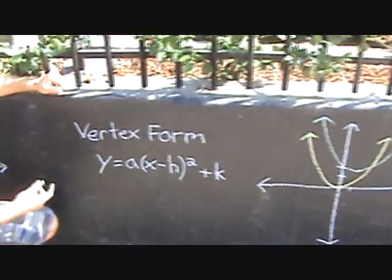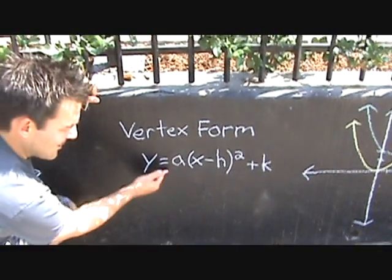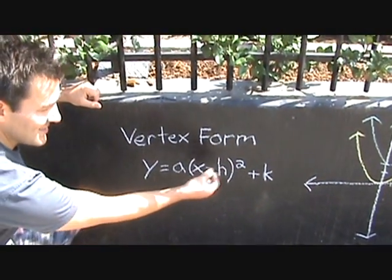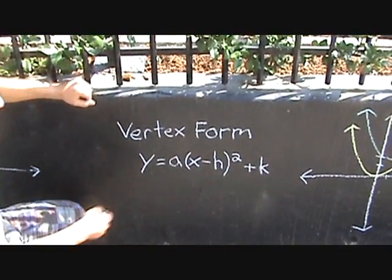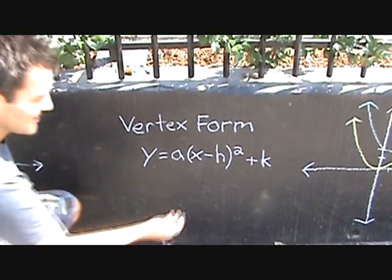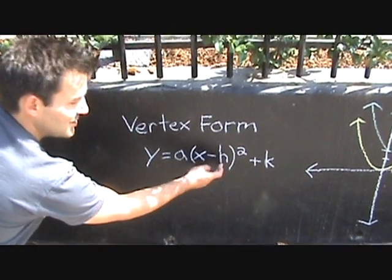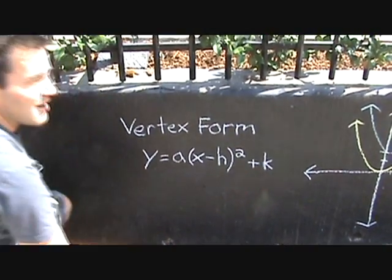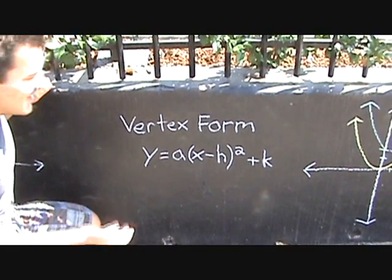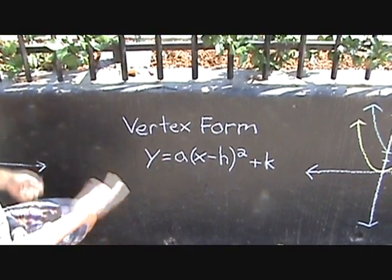This is vertex form. The general form is y equals a times the quantity x minus h squared plus k. What we do is we graph the vertex shifted over h units and up or down k units, depending on if k is positive or negative. So let's try an example.